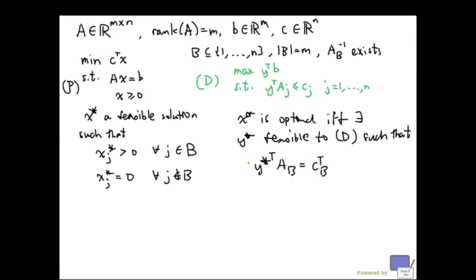So, since y star is uniquely determined, all we need to check is whether or not the y star given by this satisfies the inequalities. So x star is optimal if and only if when y star is given by this, it satisfies these inequalities.